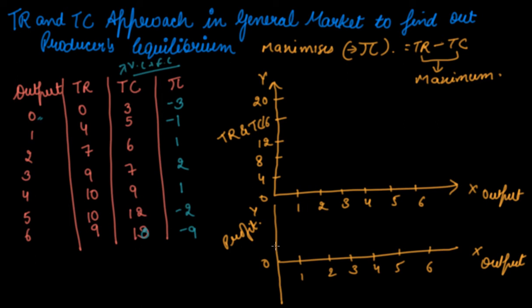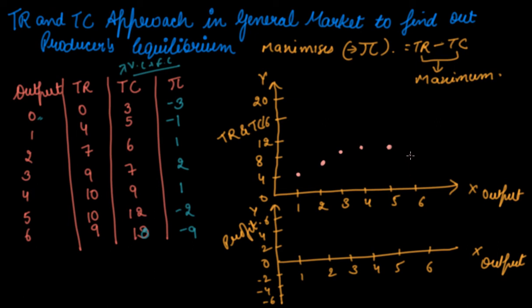For the profit graph, let's take a scale of 2: values 2, 4, 6, and also minus 2, minus 4, minus 6 below the axis. Now let's plot the TR points: at output 0 it is 0; at 1 it is 4; at 2 it is 7; at 3 it is 9; at 4 it is 10; at 5 it is 10; at 6 it is 9. This gives us the total revenue curve.